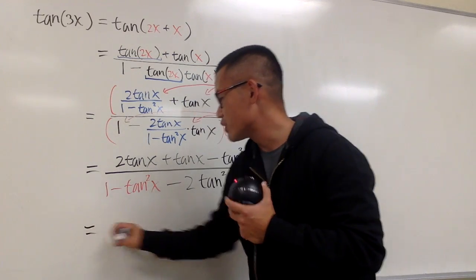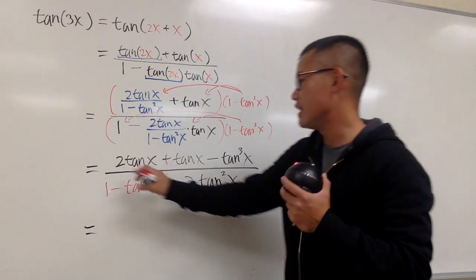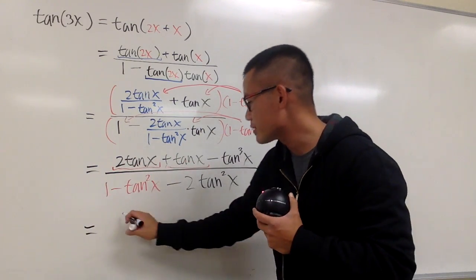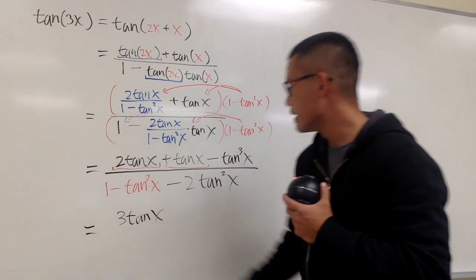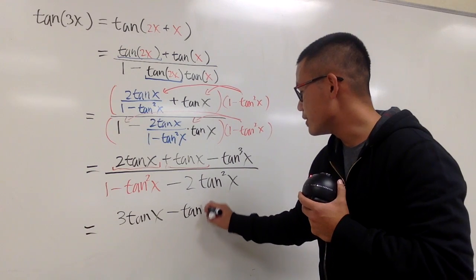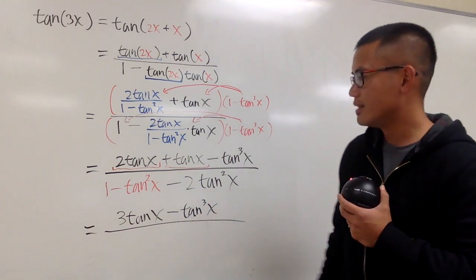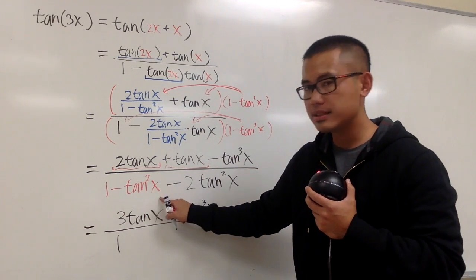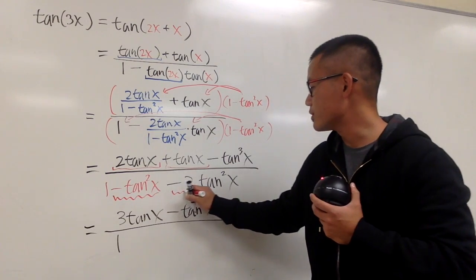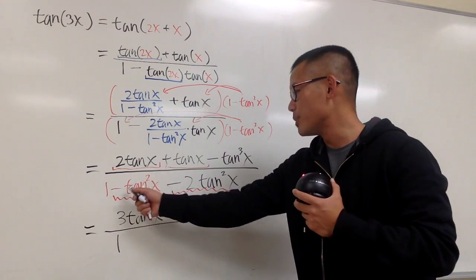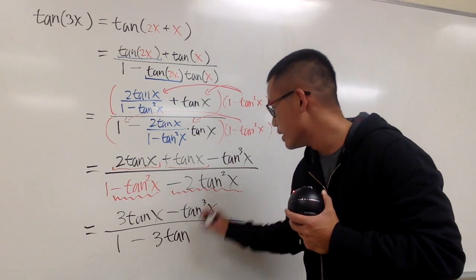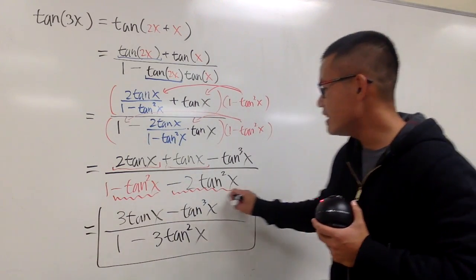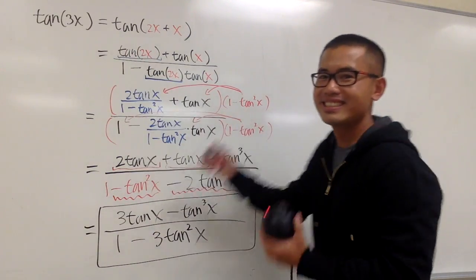At the end, we check if we can combine terms — and yes, we can. Here, 2 tangent x plus tangent x gives a total of 3 tangent x. And then we have minus tangent to the third power x. On the bottom, we have 1 minus tangent squared x, and then minus 2 tangent squared x, which altogether gives minus 3 tangent squared x. And this is the identity for tangent of 3x.